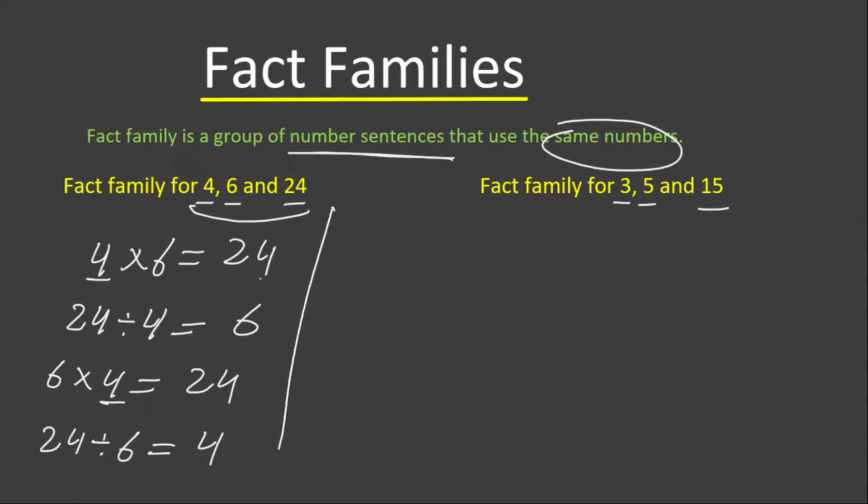Let's now move to the second set of numbers. Over here we have 3, 5, and 15. First of all, we are going to write the multiplication sentence: 3 times 5 equals 15.